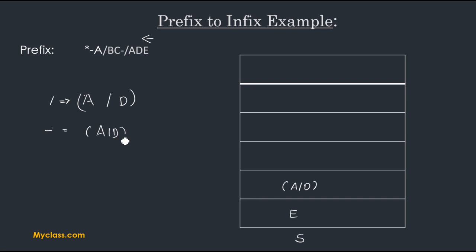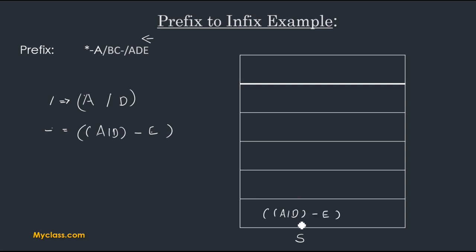Then a subtraction operator arrives. It is also an operator, so we pop 'A / D' and E — all elements are popped, so the stack contains nothing. We make a string with subtraction as the operator, forming '(A / D) - E', and push this whole string into our stack. Now only one element is in the stack. Next, operand C arrives and we push it, then operand B arrives and we push it.